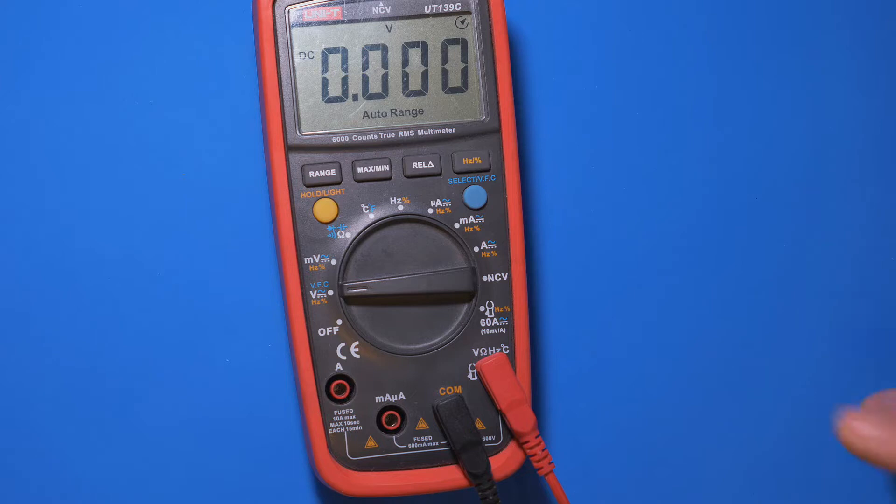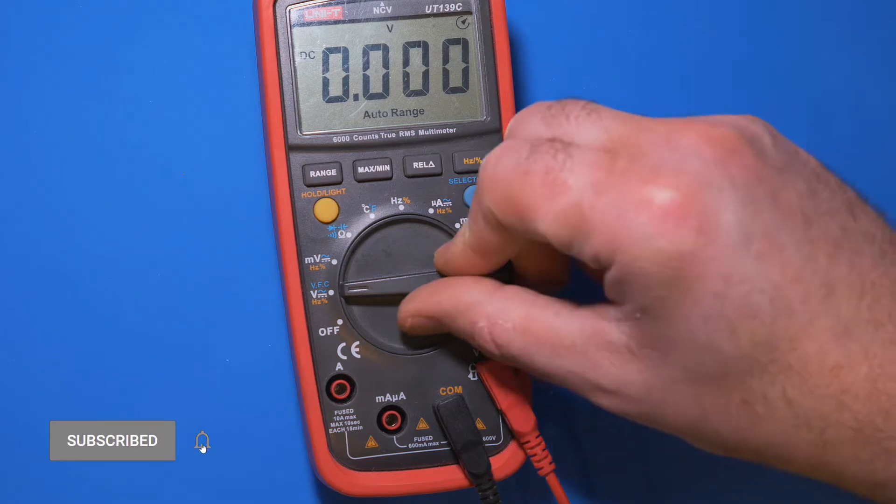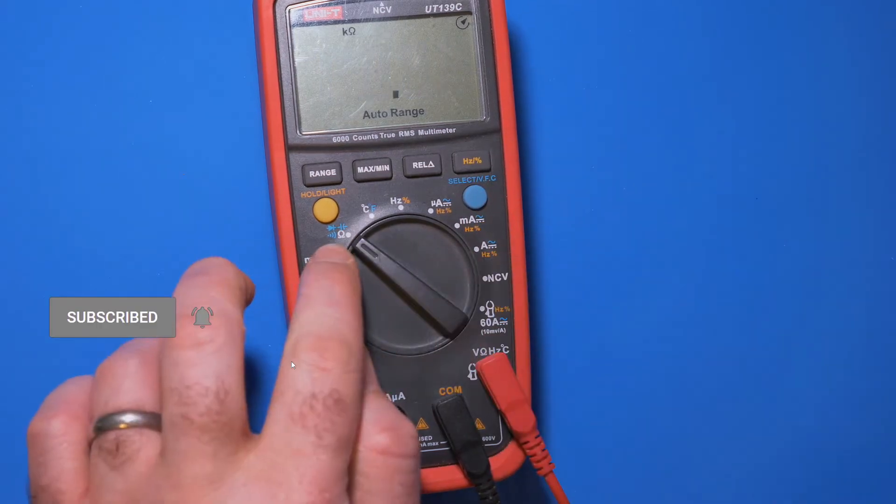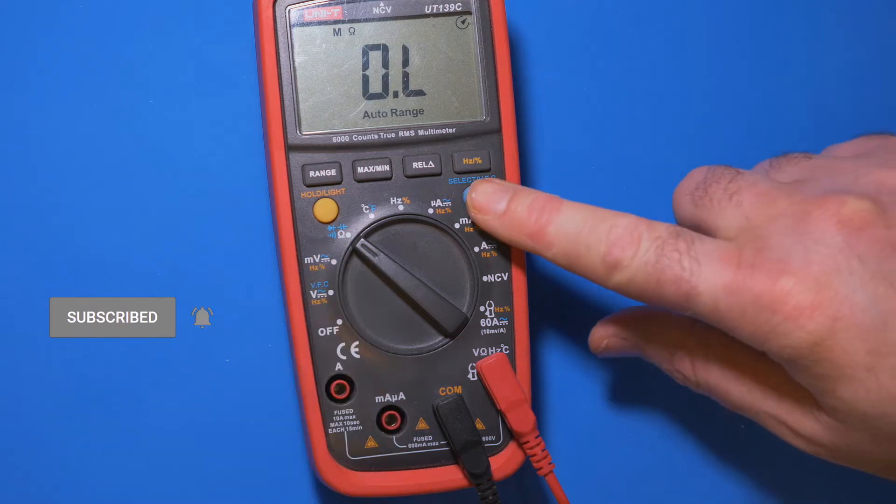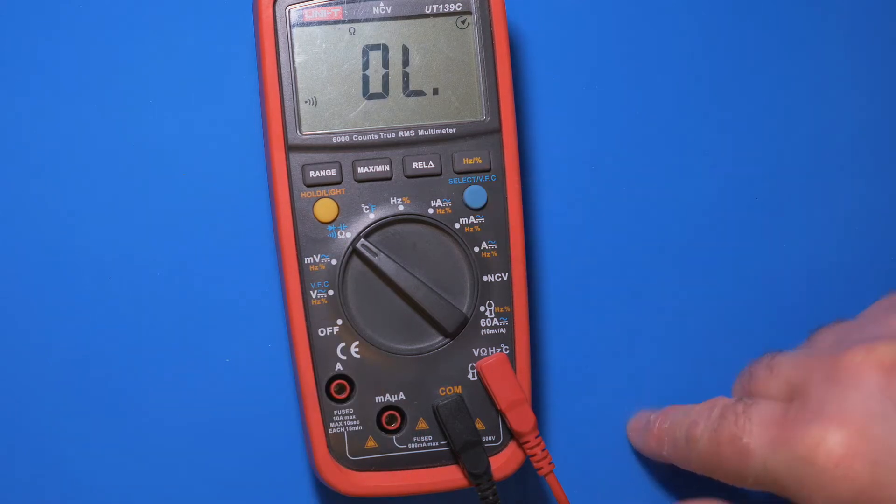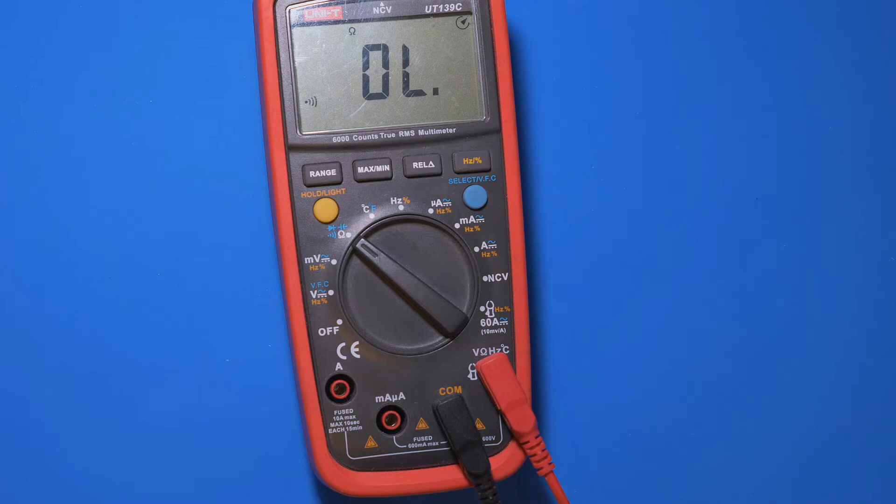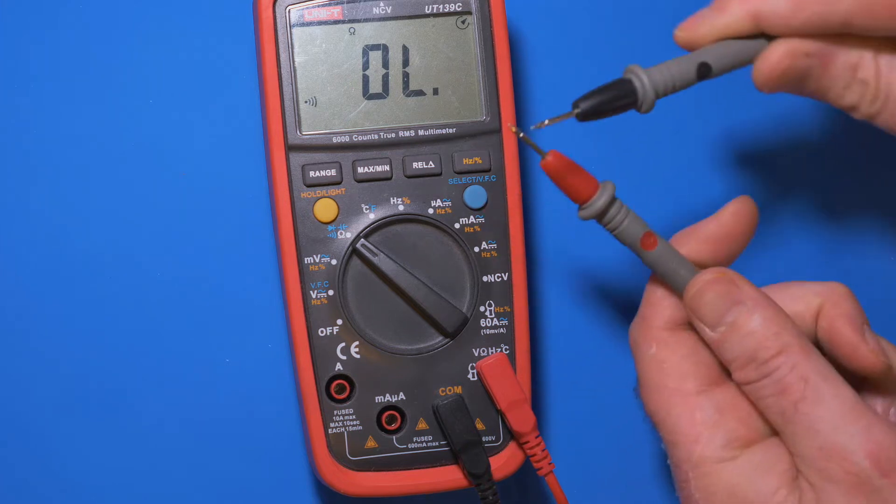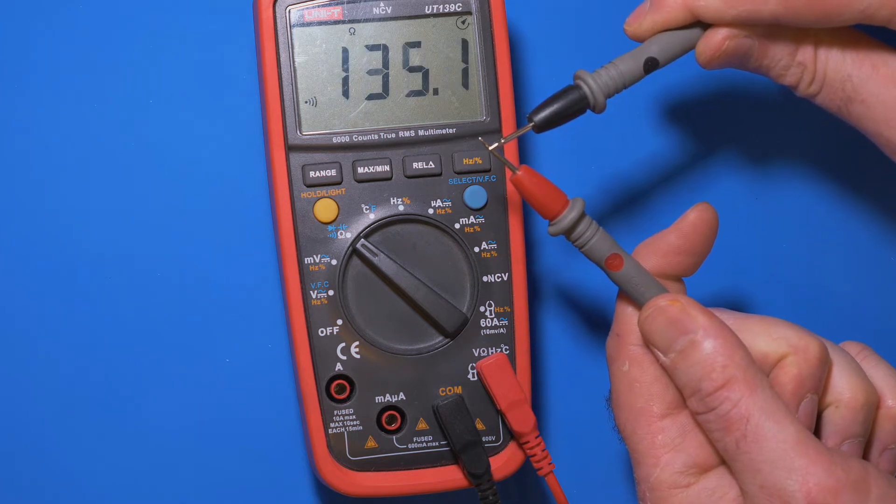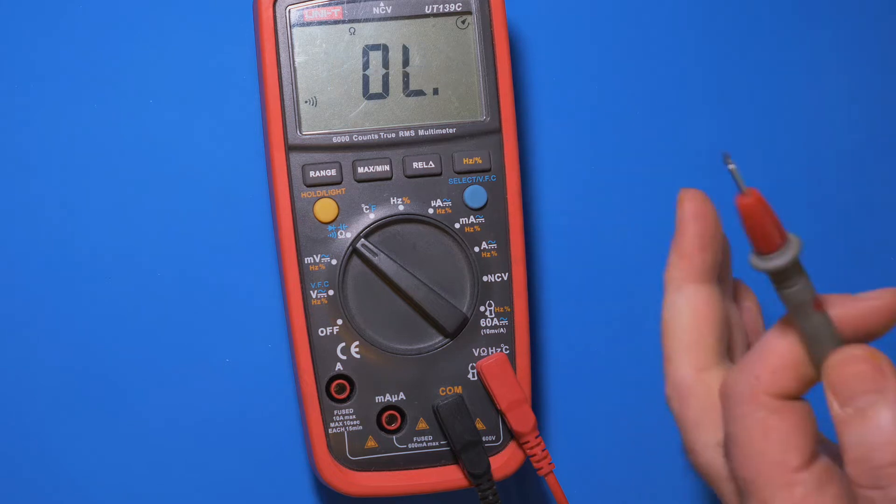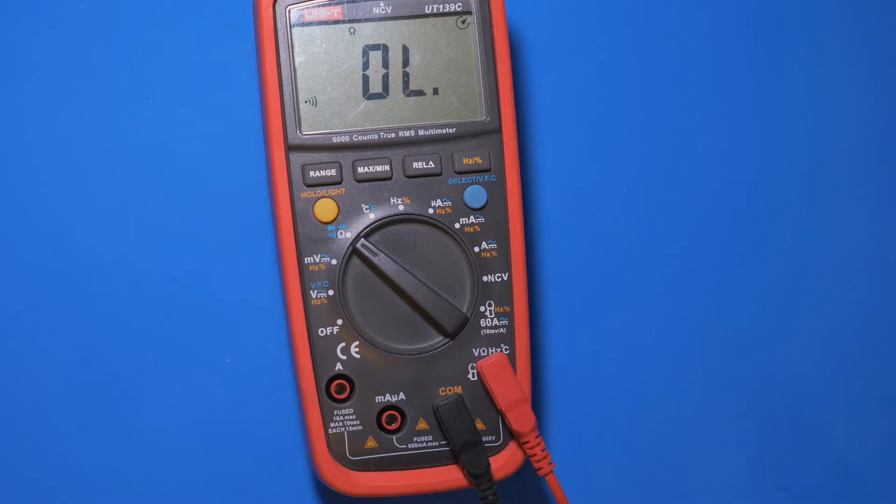There's one other thing to show you which is very useful, and that's this button here. If we switch this up to the resistance, the ohms, and we press this button, it allows you then to have an audible alert when there is a short. So if there's a dead short, then you'll hear that beep, and that's very useful for tracing faults.